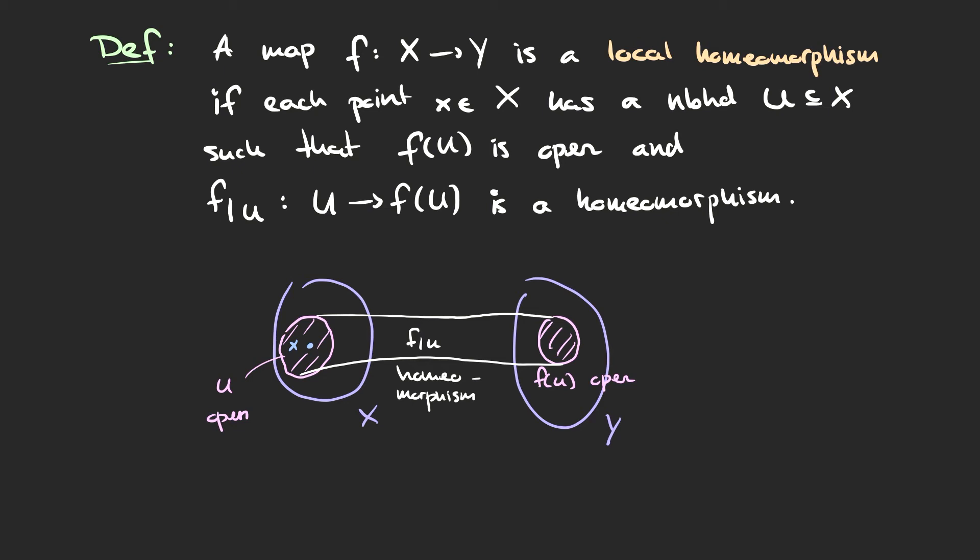This restriction to neighborhoods around points is exactly what the word 'local' is supposed to convey. It means that perhaps the entire function f is not a homeomorphism. However, if we just think about ourselves sitting at a point, we can always find a small neighborhood around that point on which f is actually a homeomorphism onto its image f(U), which is open. The requirement that the image be open is just so that you can easily think about the image space as being a topological space in its own right.